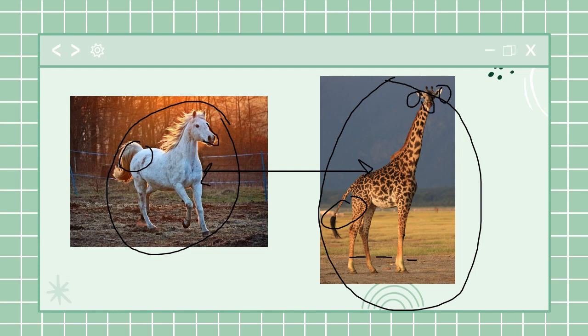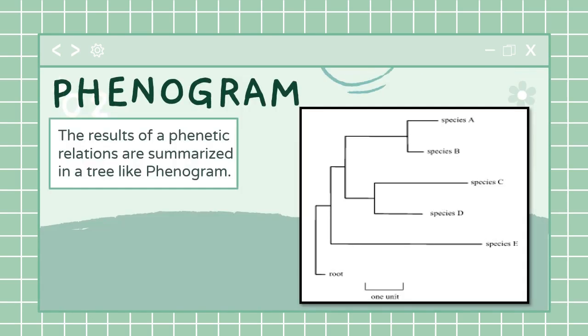I can use all of these traits to relate both of these organisms. The results of a phenetic relation - we choose two species and then we map the traits that are similar and dissimilar.